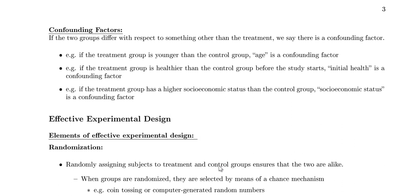So now: confounding factors. If two groups differ with respect to something other than the actual treatment — in this case the vaccine — we say that there is a confounding factor. If your treatment group is younger than your control group, then age is a confounding factor. If your treatment group is healthier than the control group before the study starts, then initial health is a confounding factor. If your treatment group has a higher socioeconomic status, then socioeconomic status is a confounding factor. In our last example, age and whether or not you consented to the study would both be confounding factors.